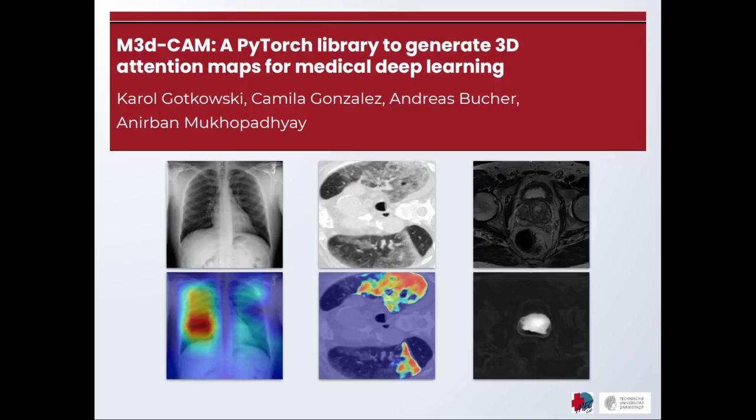Various approaches exist to create saliency maps, also known as class activation maps or attention maps for 2D images or classification tasks. These maps can help to make deep learning models more interpretable and explainable by showing the areas the model paid most attention to.